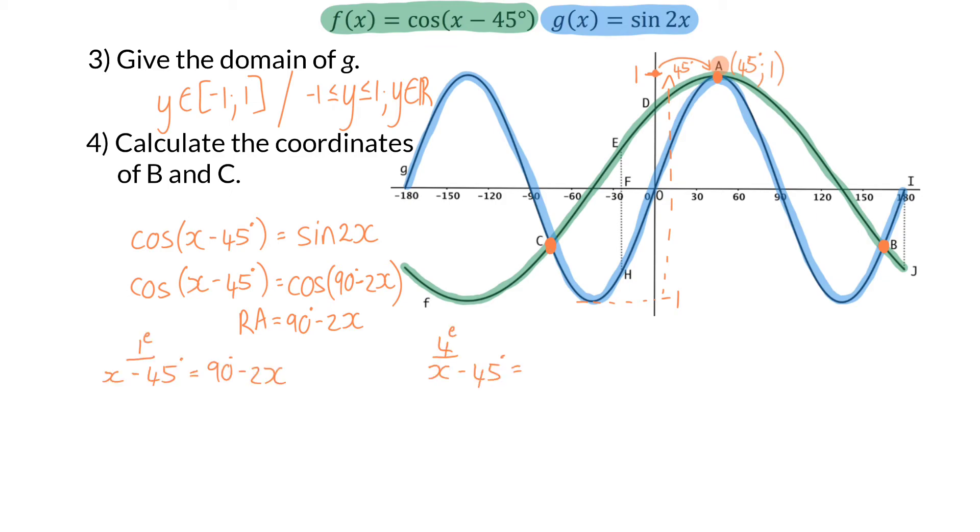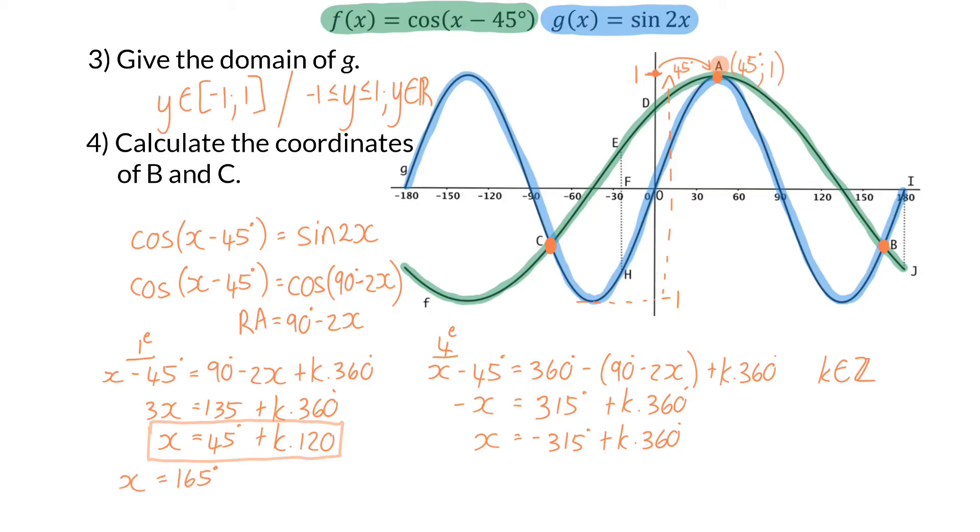Then I break up into the quadrants where cos is positive, add my reduction formulas, and simplify. If I then focus on my first general solution and take 45 degrees and add 1 times 120 degrees, I will get a value of 165 degrees, which will be the x value of point B. Similarly, if I take the 45 degrees and subtract 120 degrees, I will get an x value of minus 75 degrees, which will be the x value for C.